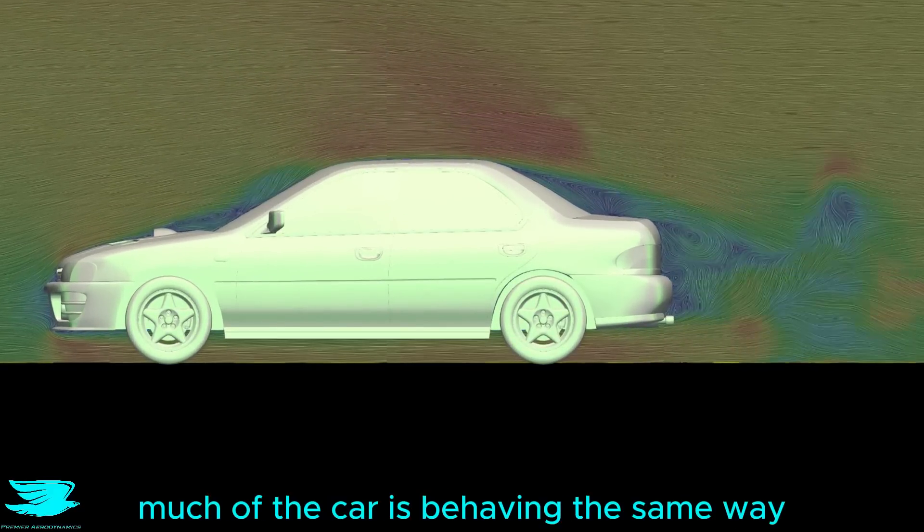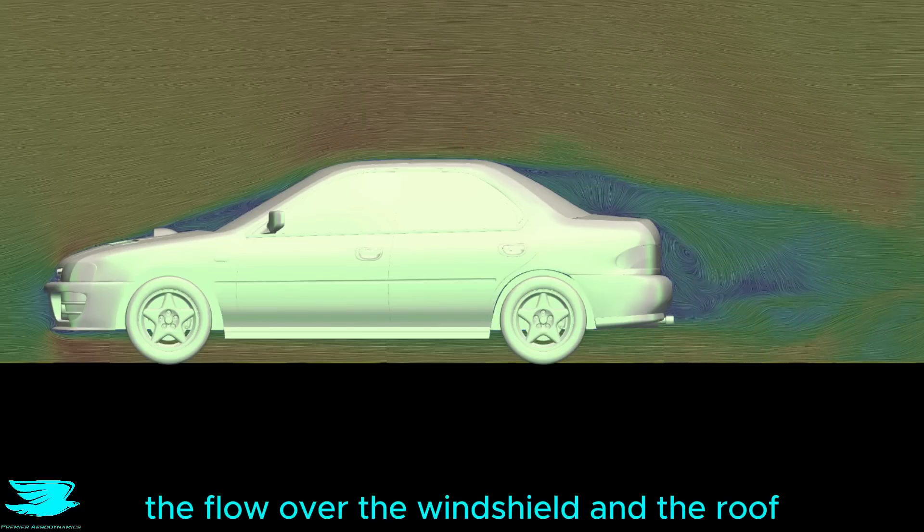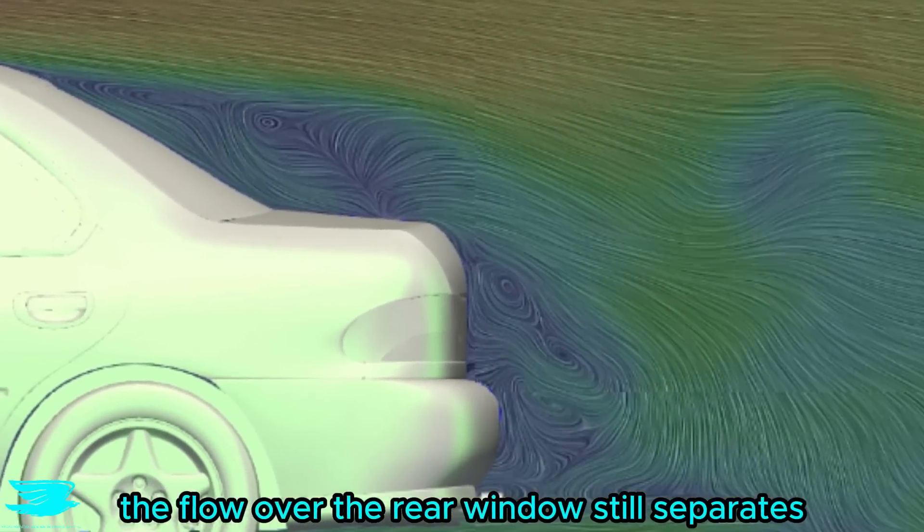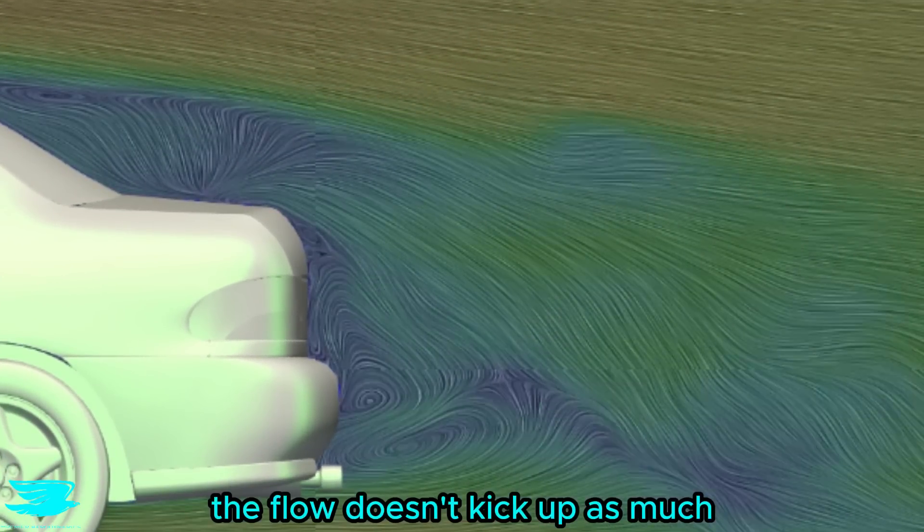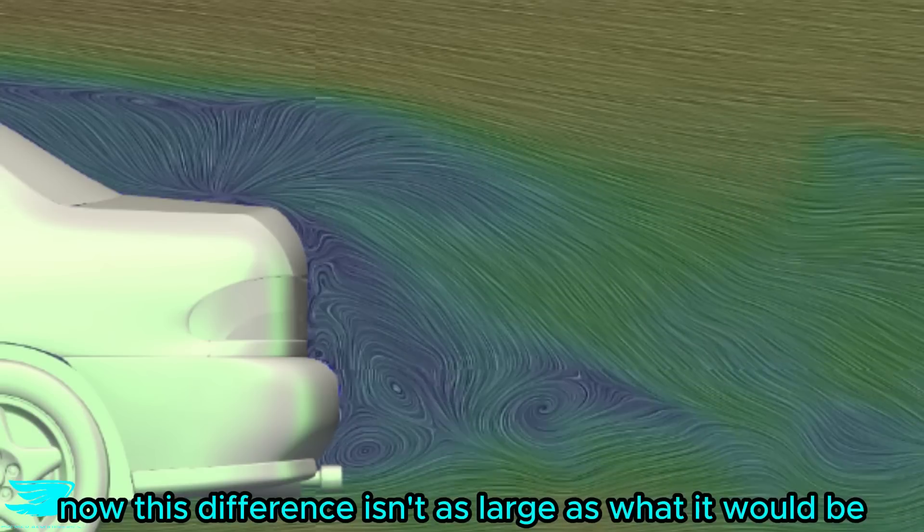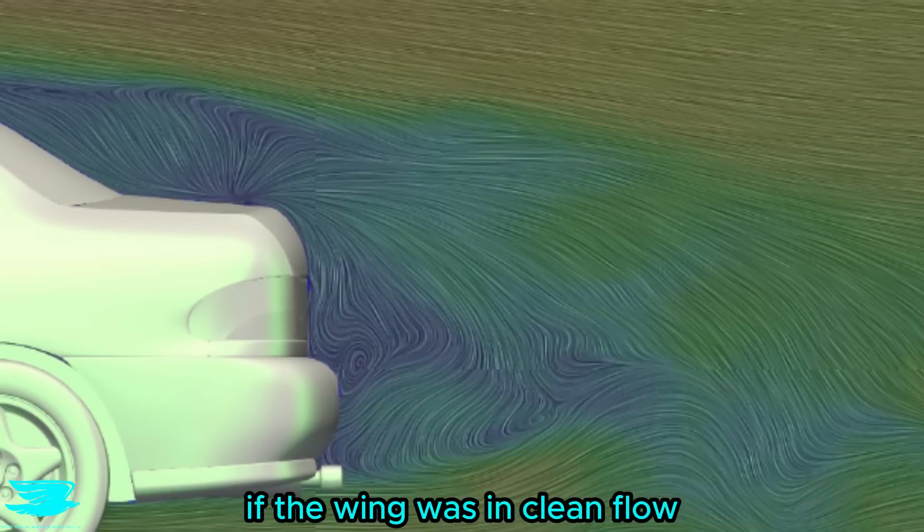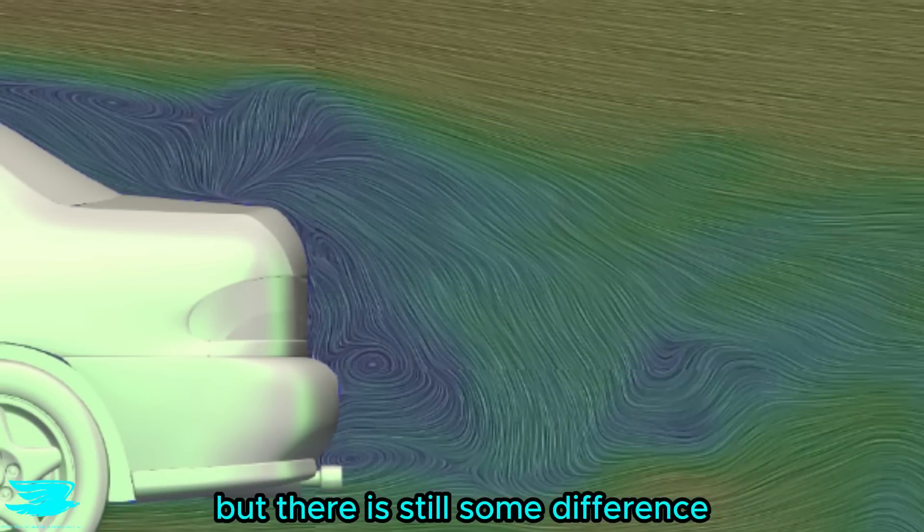Much of the car is behaving the same way. For example, the front underbody, the flow over the windshield and the roof, and of course, the flow over the rear window still separates. But looking at the wake, without the wing, the flow doesn't kick up as much. Now this difference isn't as large as what it would be if the wing was in clean flow to begin with, but there is still some difference.